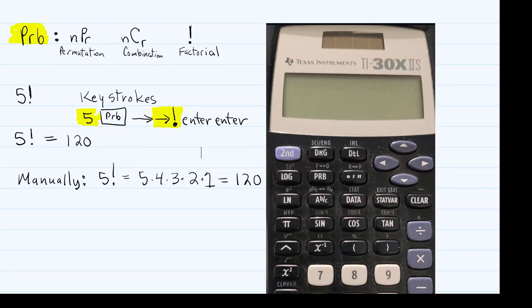This video shows you how to use the keystrokes of this specific Texas Instrument Calculator, but many calculators are similar. If there's a PRB button on any calculator, that's probably the button you're gonna depress if you wanna do a permutation, combination, or factorial.